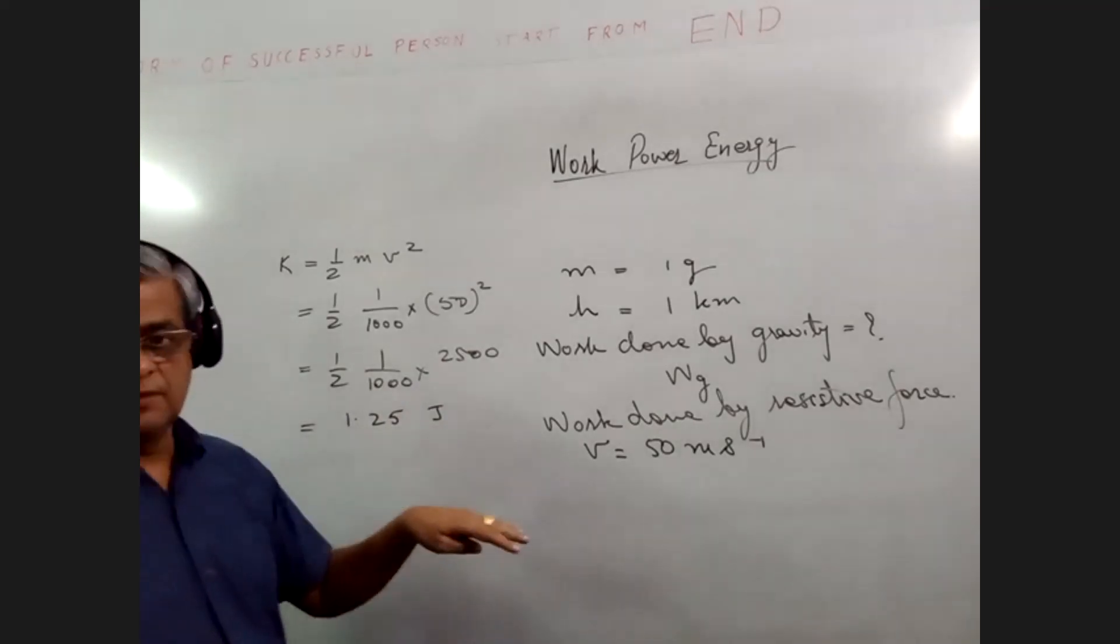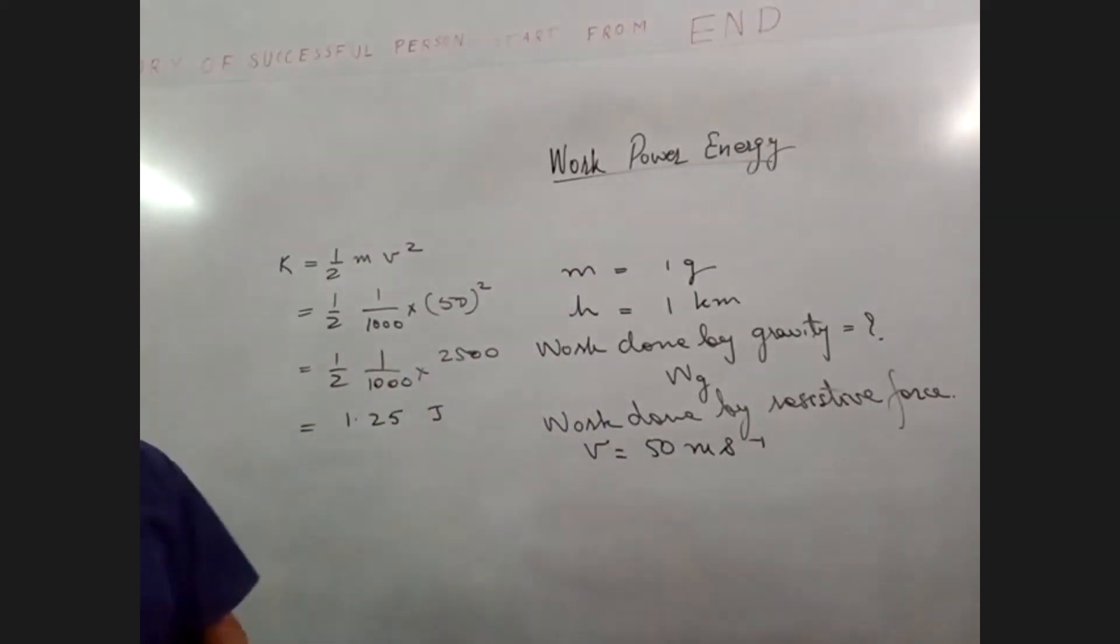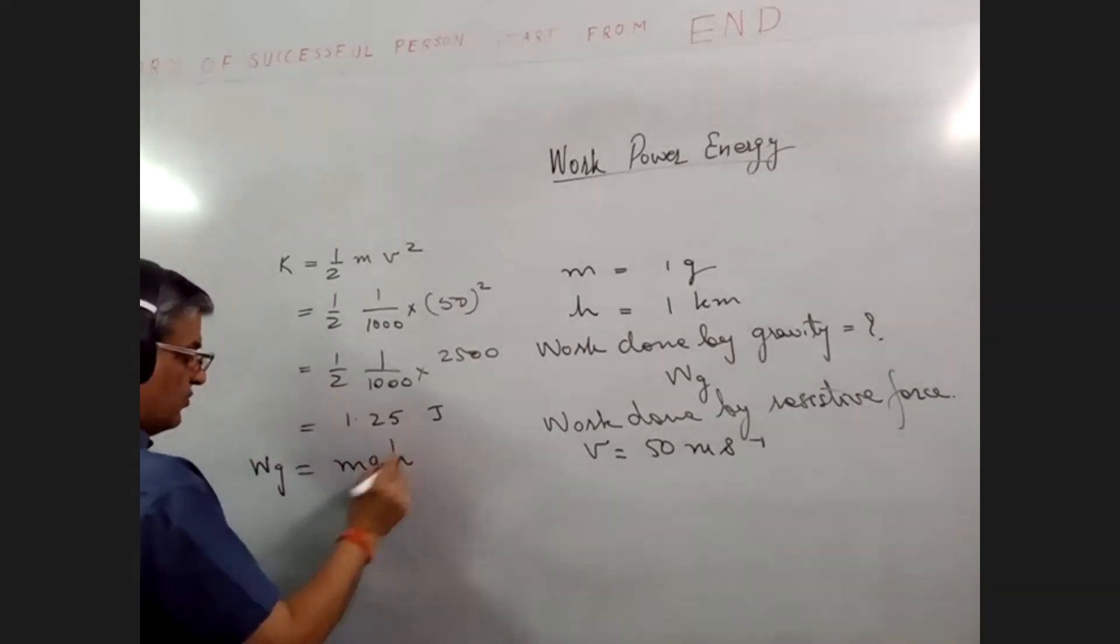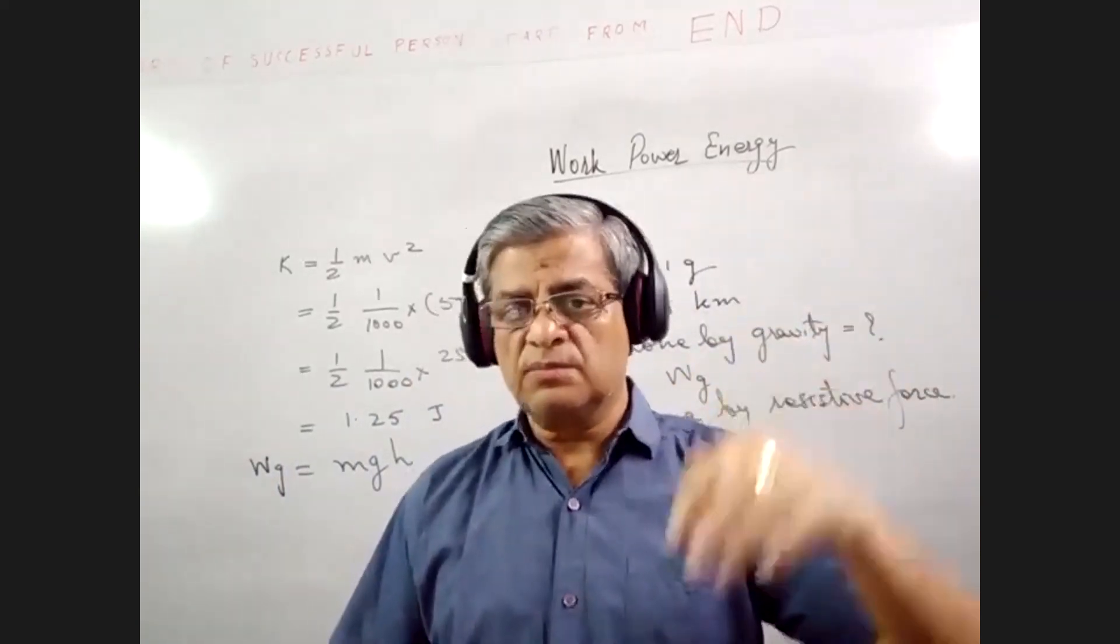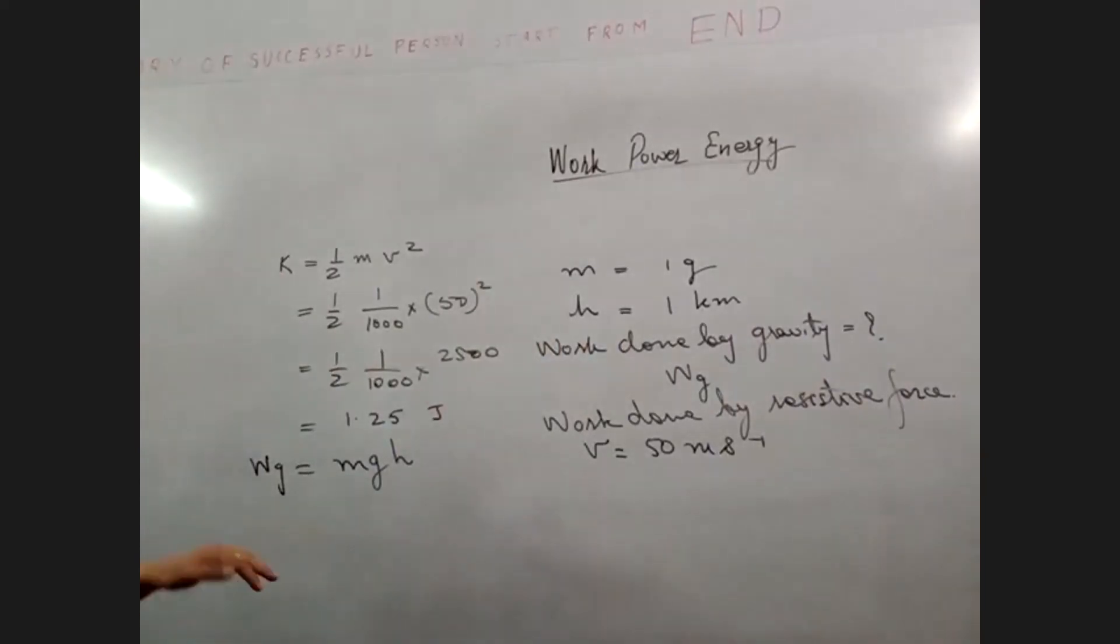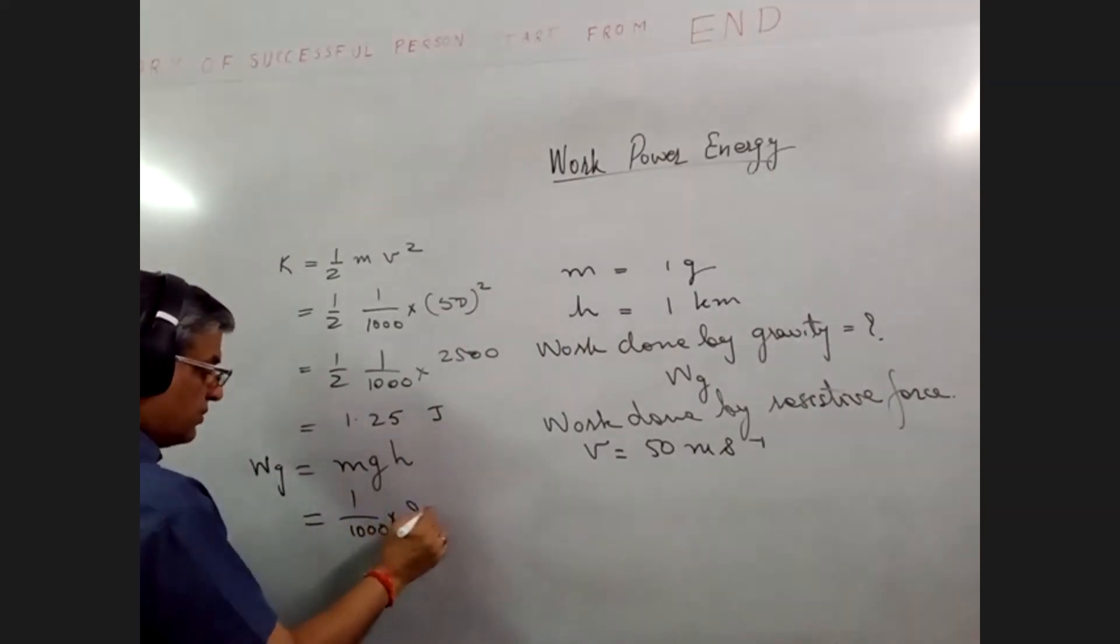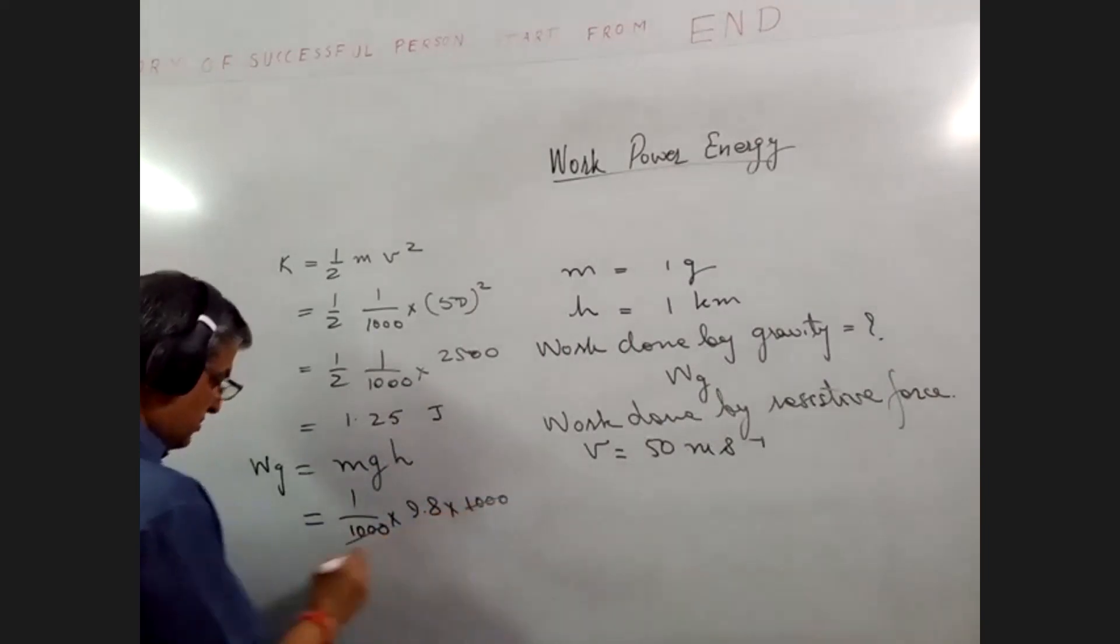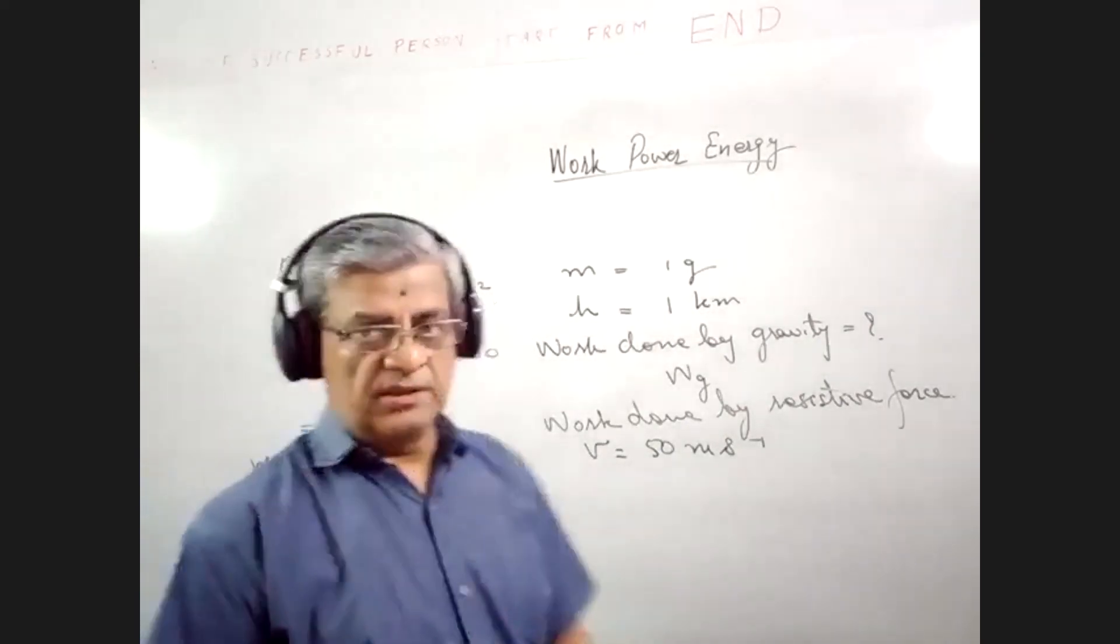This is the energy with which the drop hits the ground. But the total work done by gravity is how much? Total work done by gravity is mgh. The weight is the force acting on this drop, and this drop has displaced by a distance of 1 kilometer. So total work done by the gravity on the drop is 1 upon 1000 into 9.8 into height that is 1000. So this is 9.8 joules. So 9.8 joules of work is done by the gravity on the drop.